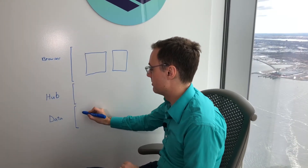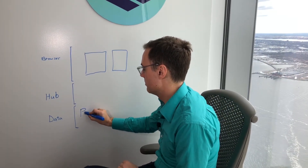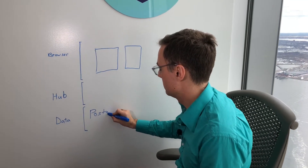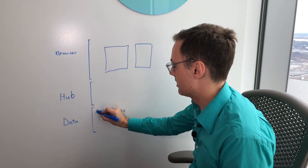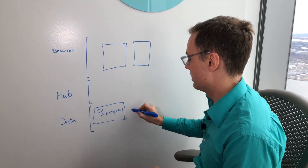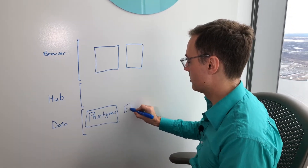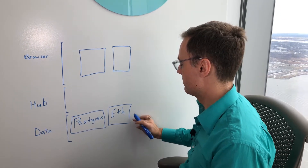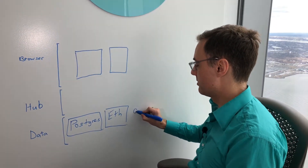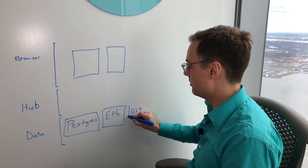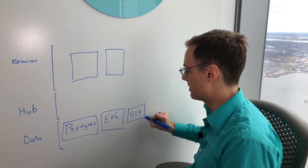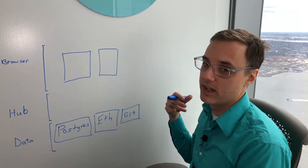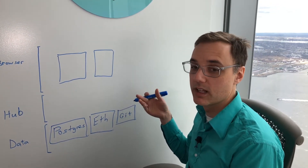Your data sources can range from a traditional SQL database — Postgres is an example — to the Ethereum blockchain, which could totally be a data source where you might want to store and retrieve stuff. Git is actually really great for all kinds of content, and when you can put a great user experience in front of the power of Git, you get a lot of the benefits that developers have that end users don't today, in terms of versioning and collaboration.